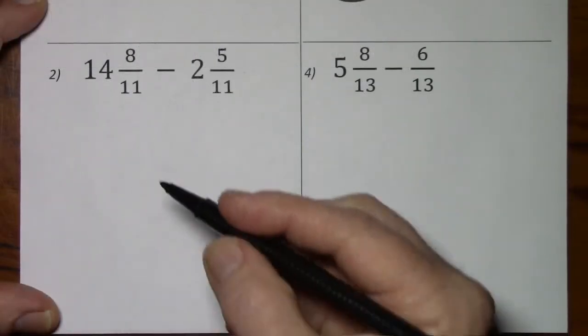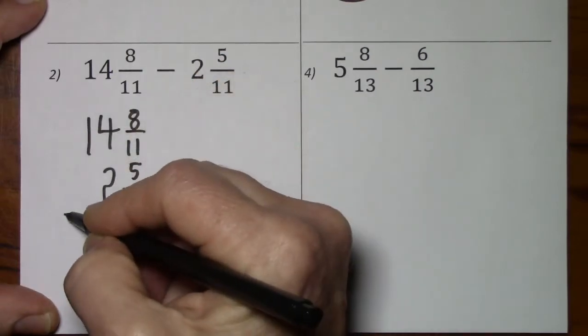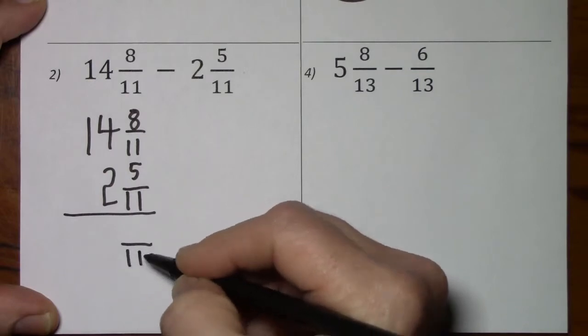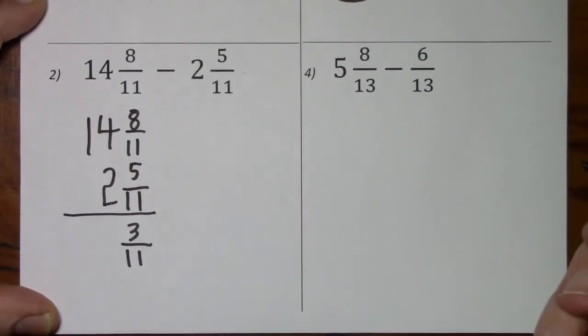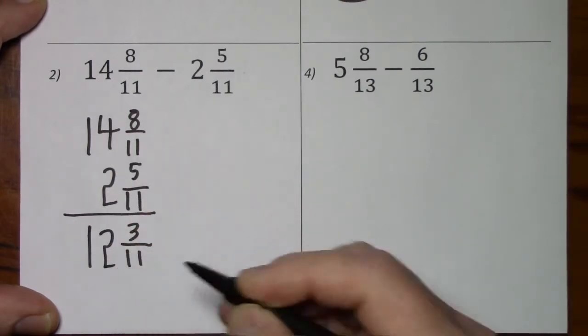Looking at this one, the signs are different. We will be subtracting. We have our common denominator. And then it's 8 subtract 5 leaves us with 3. 14 subtract 2 leaves us with 12.